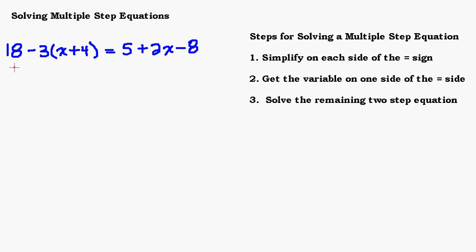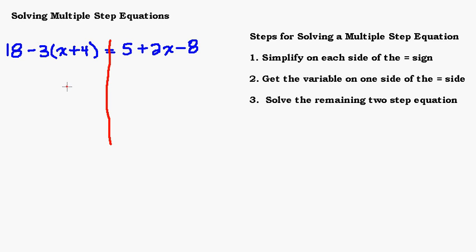The example we have is 18 minus 3 times the quantity x plus 4 equals 5 plus 2x minus 8. Sometimes when I'm first starting out teaching this, I might encourage students to draw a line at the equal sign, really reinforcing the idea that we have two sides, and a lot of the rules depend on whether terms are on the same side or on opposite sides.